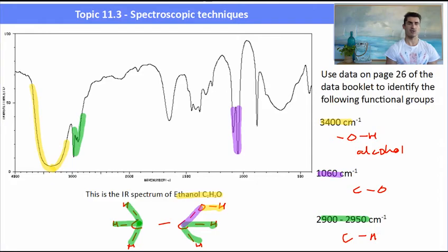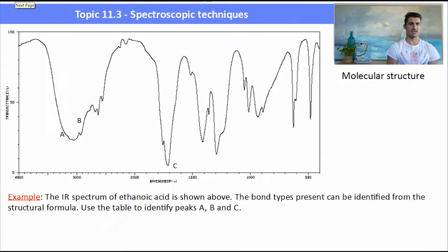So here is another one. The IR spectrum of ethanoic acid is shown above. The bond types present can be identified from the structural formula. Use the table to identify peaks A, B, and C. And by the table, we mean that page in the data book. So here I have a big, broad stretch, which is in the green, and then I've got this other series of stretches here in the yellow, and then I have a very strong peak at about 1750, which is labelled C. So what are these peaks?